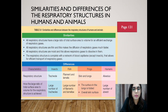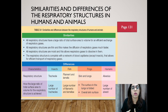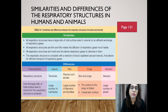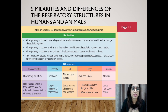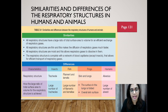Here you can look at the similarities and differences of the respiratory structures in humans and in animals. You can find this in table 8.1 on page 131 of your textbook. Go through that and see if you understand the differences between the structures in humans and animals.